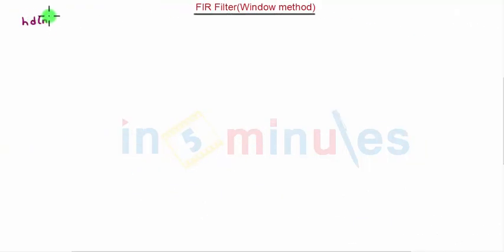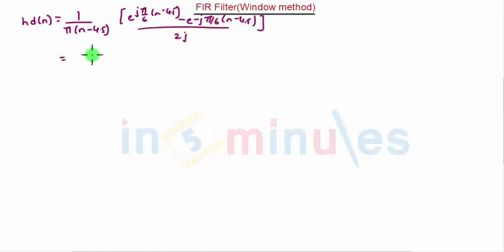HD of n is equal to 1 upon pi into n minus 4.5, e raised to j pi by 6 n minus 4.5, minus e raised to minus j pi by 6 n minus 4.5. Again, the whole divided by 2j. Now, finally, we get the answer as 1 by pi n minus 4.5, sin of pi by 6 n minus 4.5.